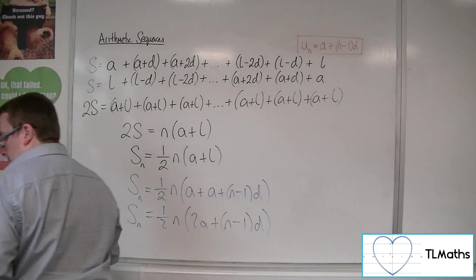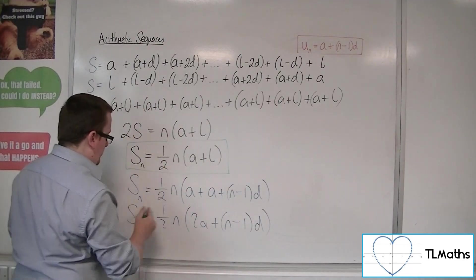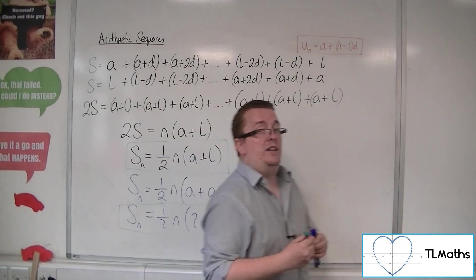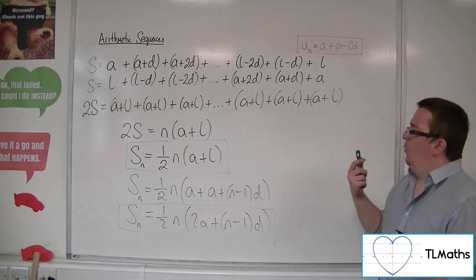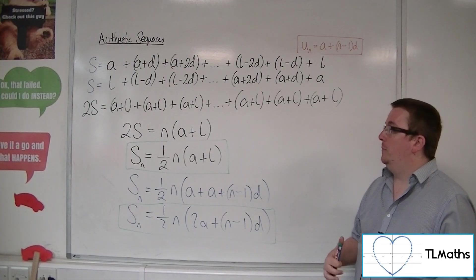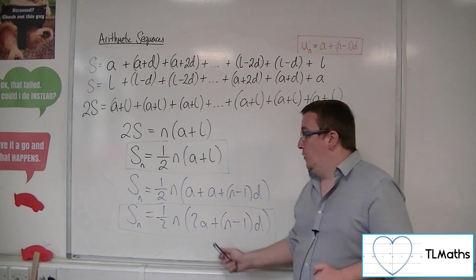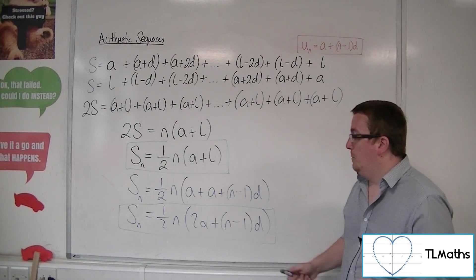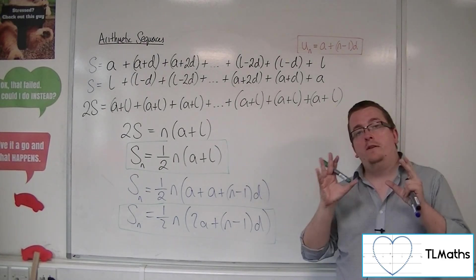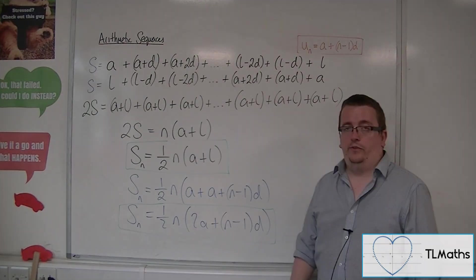So this one, this formula, and this formula, they are both going to give you exactly the same result. But one is useful if you know the first, last terms, and n, the number of terms. And the second formula is useful if you just know the first term, the common difference, and the number of terms you're looking for. So two slightly different ones to use, but they both give you the same results.